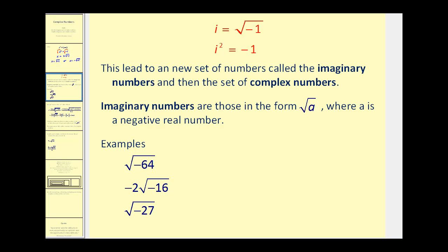This led to a new set of numbers and two new definitions: that i is equal to the square root of negative 1, and i squared is equal to negative 1. This led to a new set of numbers called the imaginary numbers, which then led to the set of complex numbers. Imaginary numbers are those in the form of the square root of a, where a is a negative real number.